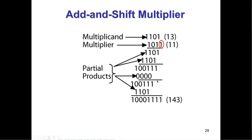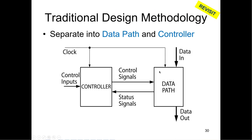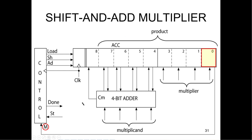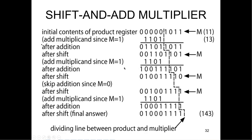The multiplier — we looked at these. The thing to remember is that it just shifts and checks the multiplier. If the multiplier digit is zero, it doesn't add — it just shifts. If the multiplier digit is a one, then it does the addition. Notice these lines are bidirectional. They don't show you how that works, so I don't see the big benefit here. And then they show how you can divide up the data path and the control path.